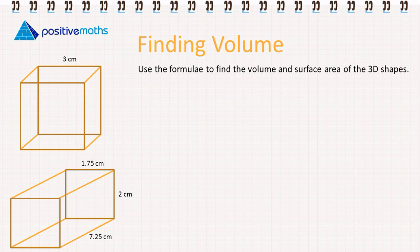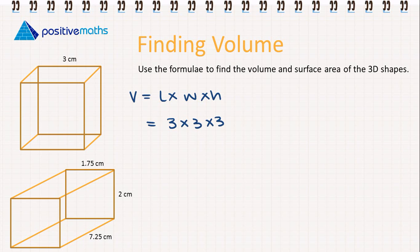Let's put this into practice. We need to use the formula to find the volume first, starting with the cube. The volume is length by width by height. For a cube they are all going to be 3cm. So that means it's 3 cubed — that's why we call it cubed — and we get 27cm cubed.